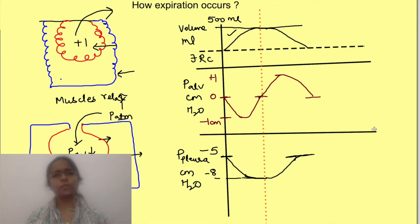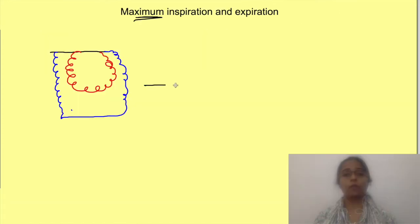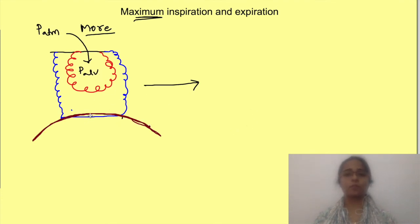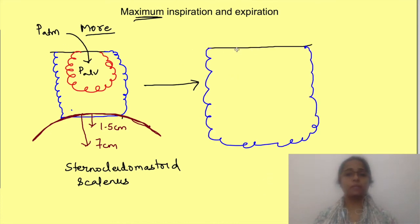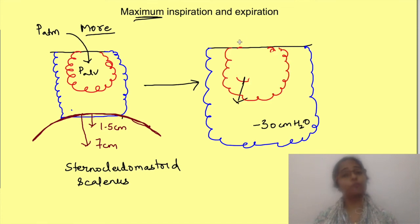For forced inspiration, the pressures generated during tidal respiration are not sufficient to bring in more air. To inhale a volume above tidal volume, a greater pressure difference is needed. The diaphragm and external intercostal muscles contract more forcefully — in tidal inspiration the diaphragm moves about 1 to 1.5 centimeters, while for maximum inspiration it can move up to 7 centimeters. Accessory muscles of inspiration — the sternocleidomastoid and scalenes — also contract. With maximum muscle contraction, pleural pressure may become as negative as minus 30 cm water, causing much greater lung expansion and movement of much more air into the lungs.